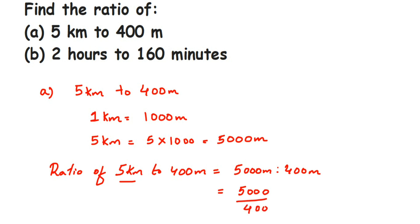Cancel the zeros in the denominator and numerator. Now cancel 50 and 4: in the two times table, two twos are four, and two times 25 is 50, so we get 25 over 2. When you convert this back into a ratio, this will be 25 is to 2. We cannot cancel this further — this is the reduced form. So the ratio of five kilometers to 400 meters is 25 is to 2.